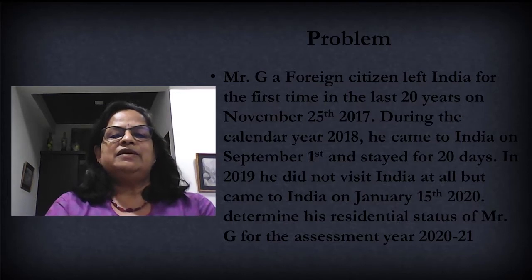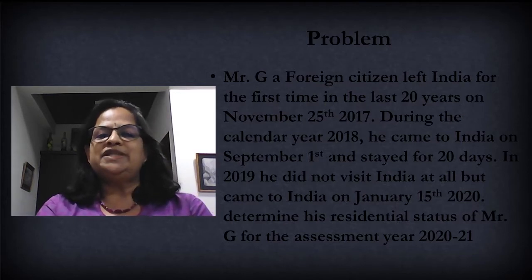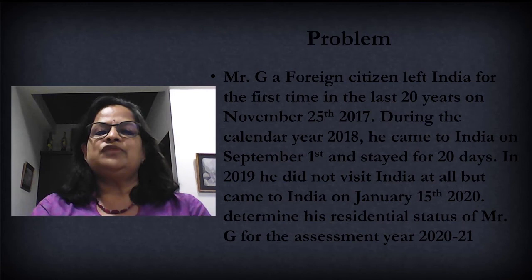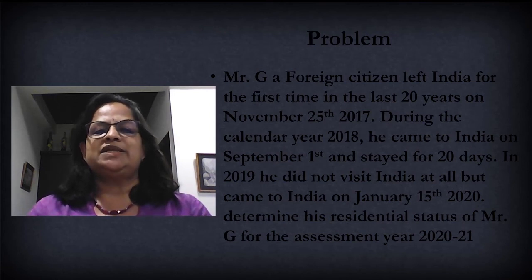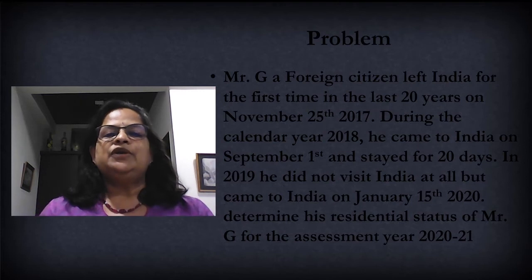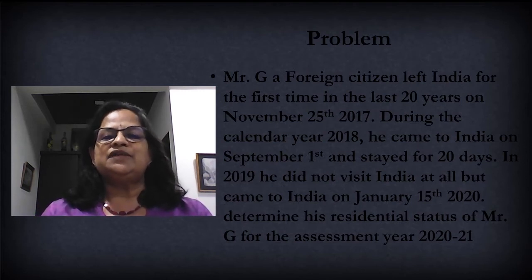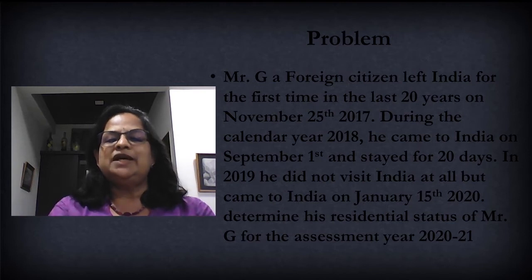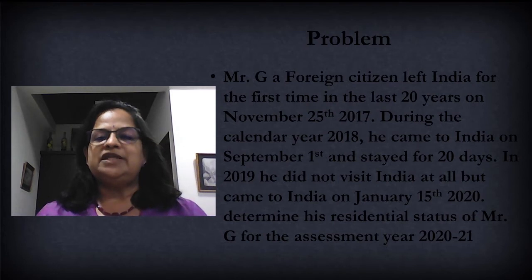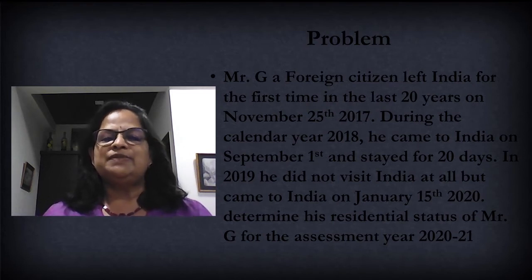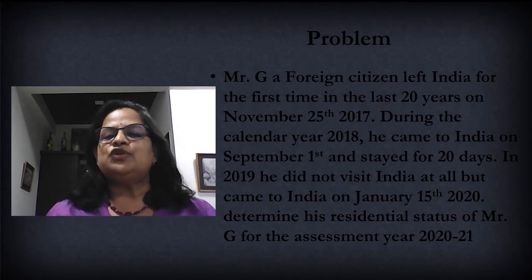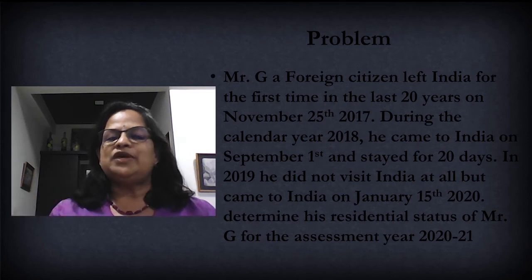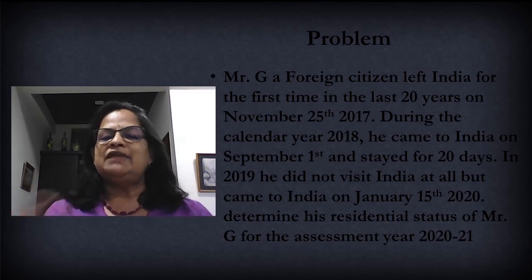The first question: Mr. G, a foreign citizen, left India for the first time in the last 20 years on November 25th, 2017. You have to remember that Mr. G is a foreign citizen — for the last 20 years he was in India and he was a resident. During the calendar year 2018, he came to India on September 1st and stayed for 20 days, so you don't have to calculate that — 20 days is directly given in the question.